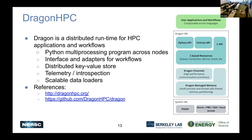Another new framework on the block is DragonHPC, primarily developed by folks at HPE. Dragon is a bit like Dask in that it has various APIs you can plug into at different levels. One of the first things it's really fleshed out is distributed Python multiprocessing. You can take your current Python code that uses the standard library multiprocessing to take advantage of a single node, and just change one or two lines to scale out across multiple nodes using that familiar multiprocessing API.